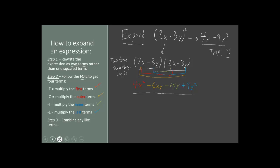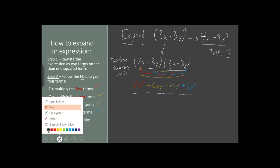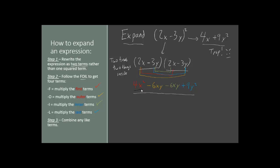Our final step is to combine any like terms. We have an x squared term, and there are no others like it. We have a y squared term, and no more of those either. We have two xy terms — negative 6xy and negative 6xy — which combine to give negative 12xy. So the final answer is 4x squared minus 12xy plus 9y squared.